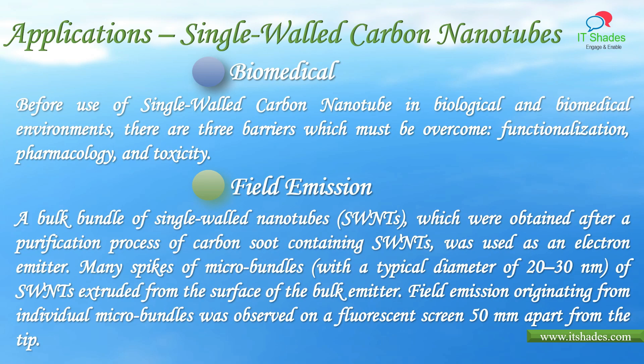Field emission. A bulk bundle of single-walled nanotubes, obtained after a purification process of carbon soot, was used as an electron emitter. Many spikes of micro-bundles of single-walled nanotubes extruded from the surface of the bulk emitter. Field emission originating from individual micro-bundles was observed on a fluorescent screen 50 mm apart from the tip.